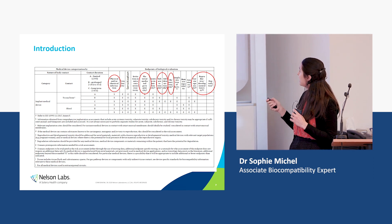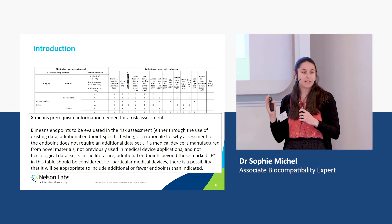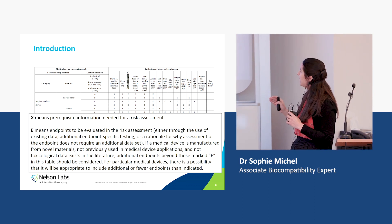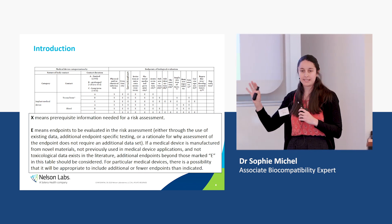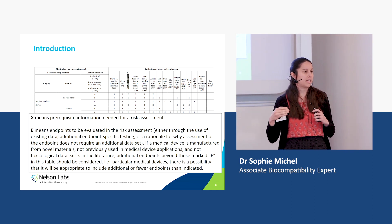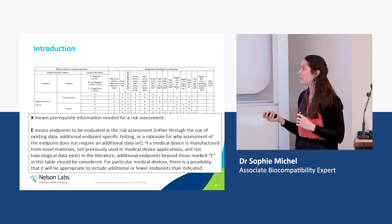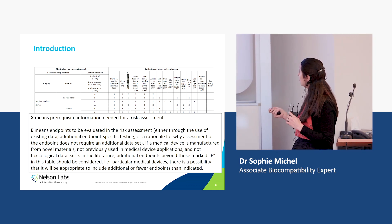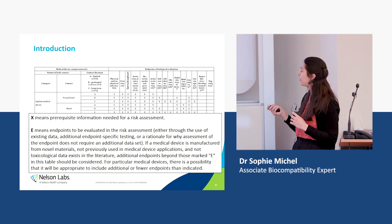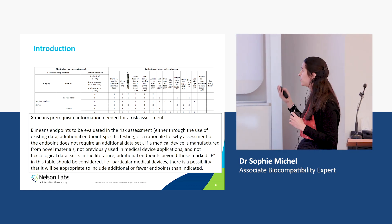Then come all kinds of X and E designations. X is defined as prerequisite information — this is the only mandatory step, the only thing you really need to do for any kind of medical device. E means an endpoint that needs to be evaluated either through testing or by other means, for example literature data, historical data on a prototype, a previous device, a predicate, or data on your raw material from your suppliers. It's also very important to note that there is a possibility that it will be appropriate to include additional or fewer endpoints than indicated on the chart.